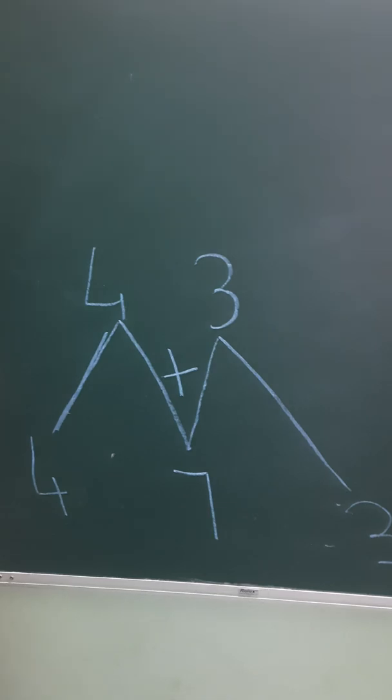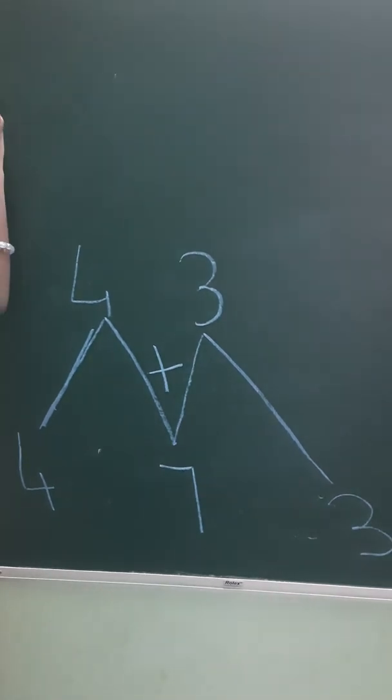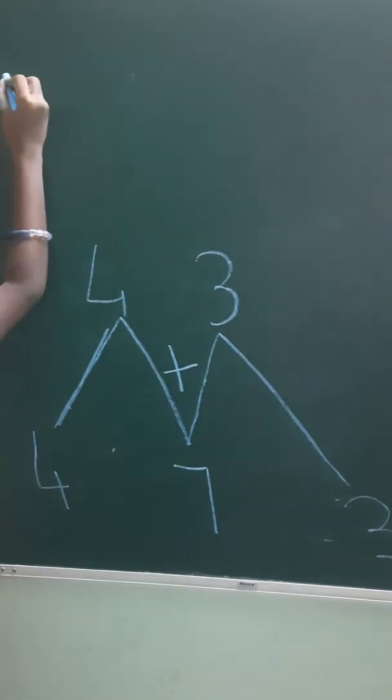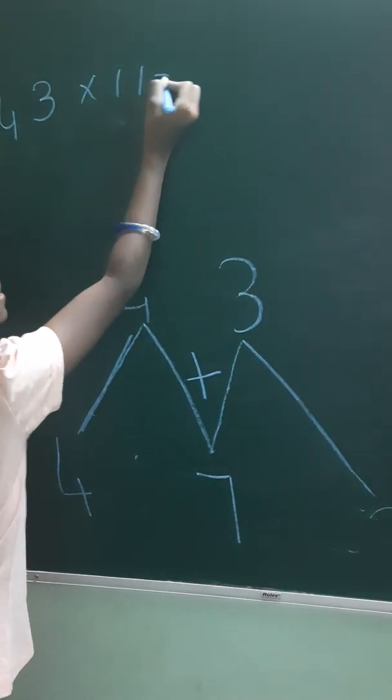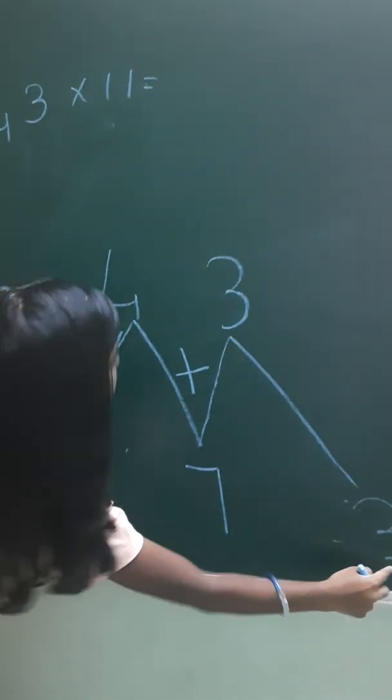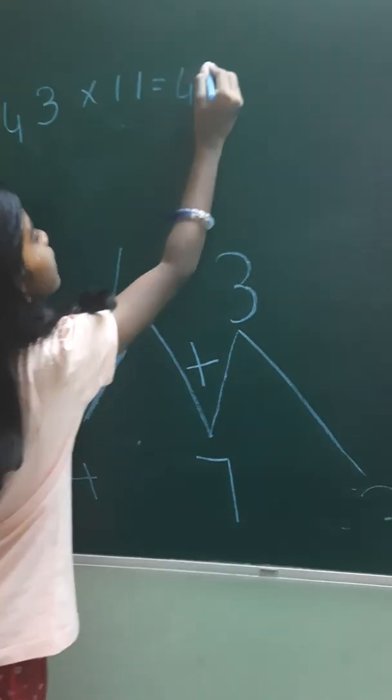Now 43. So the answer, 43 multiplied by 11 is 473.